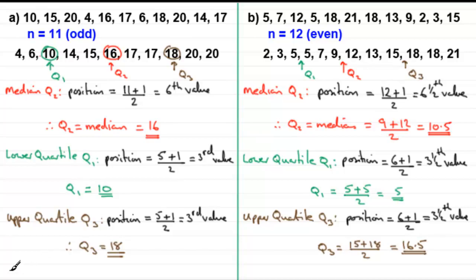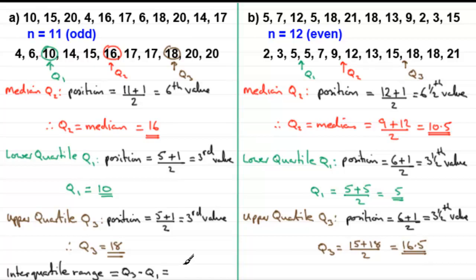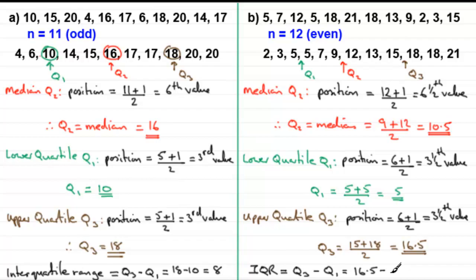It's also worth mentioning the interquartile range. The interquartile range is a measure of spread — the difference between the upper quartile and the lower quartile, in other words Q3 minus Q1. For the first example, Q3 minus Q1 is 18 minus 10, which equals 8. For the second example, the IQR is 16.5 minus 5, which gives us 11.5.